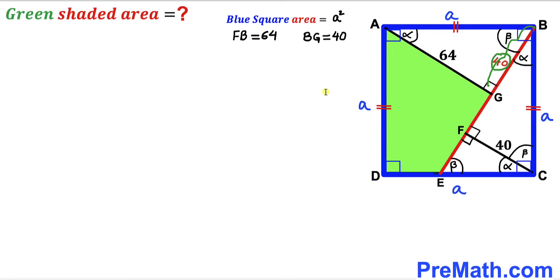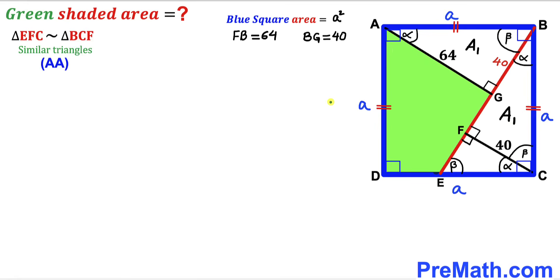Since these two triangles are congruent, their areas are equal as well. If the area of triangle ABG is A₁, then the area of triangle BCF is A₁ as well. Now let's focus on the next step involving two more right triangles.